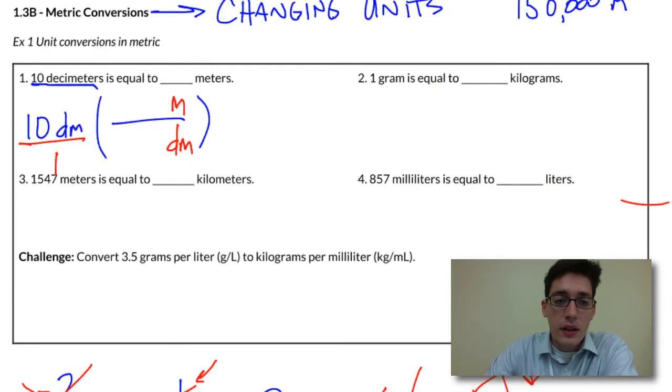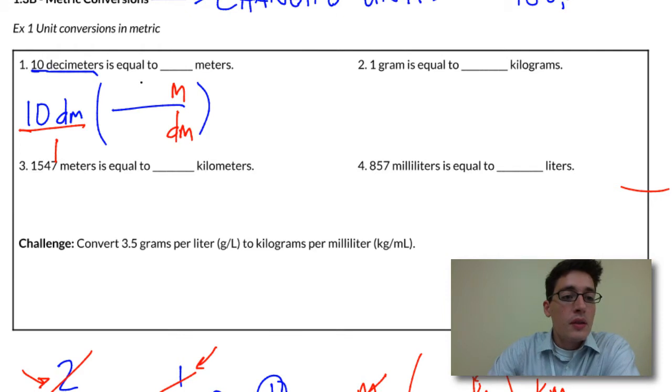And that gets carried down into our problem. So this is 1 meter and 10 decimeters. And then it's just an algebra problem. And so equals, decimeters cancels out. 10 times 1 is 10. And then 10 divided by 10 is 1. So our final answer is 1 meter.